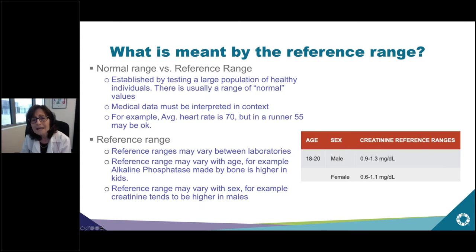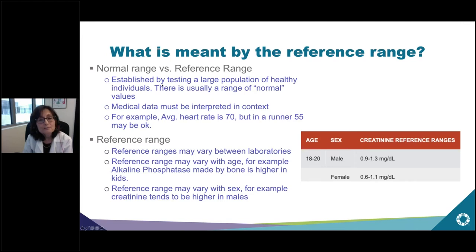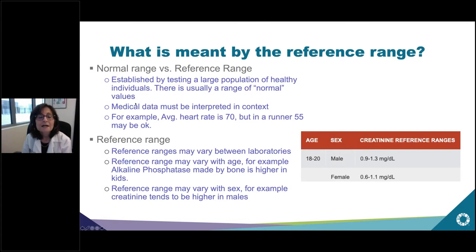What is meant by the reference range? How do you know when a lab result is abnormal? That is done by establishing what is normal in a large population of healthy individuals. There is usually not one normal value but a range of normal values listed on your test results. Medical data has to be interpreted in context — for example, the average heart rate is 70, but in a runner, 55 may be fine.